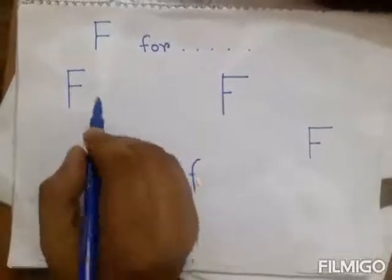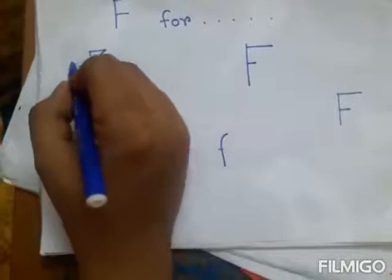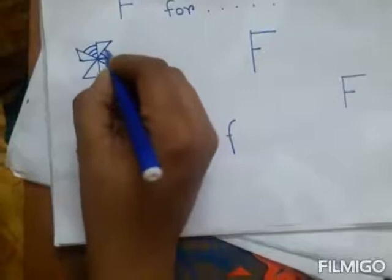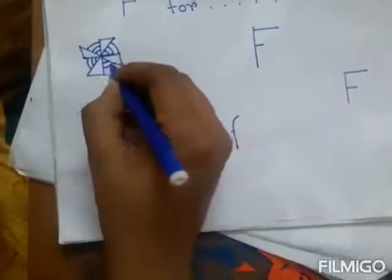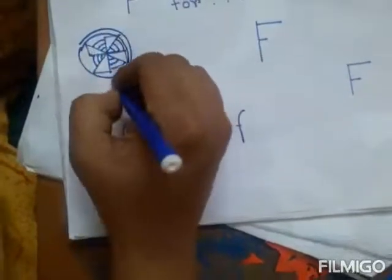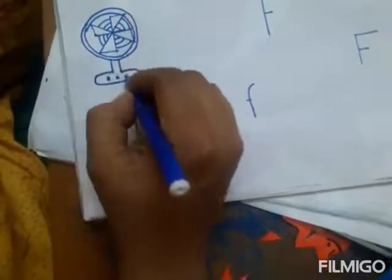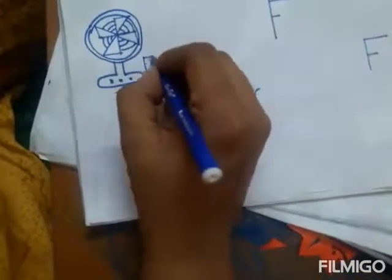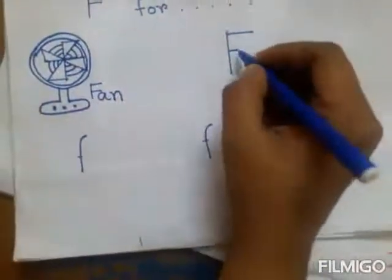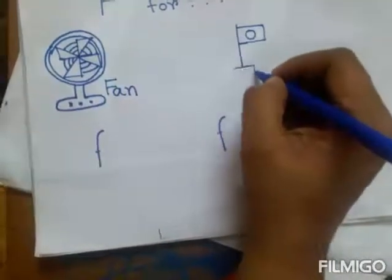Okay, now it's fun time. I am drawing some items starting with F: fan, fish, flag, and flowers using capital letter F and small letter f. This is a fan — fan starts with F. We all have a table fan in our home. Now I am drawing a flag — a national flag of Bangladesh. Fan starts with F, flag starts with F.